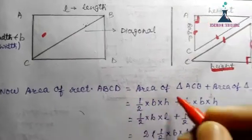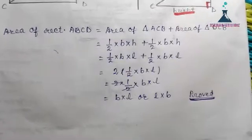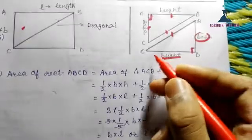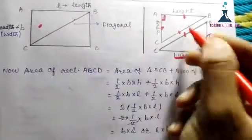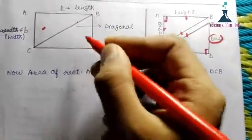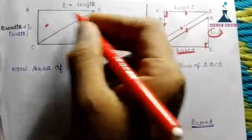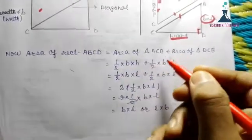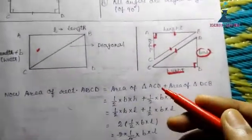The area of rectangle ABCD equals the area of triangle ACB plus the area of triangle DCB. So: area of rectangle ABCD = (half into base into height) + (half into base into height). This is based on the triangle area formula we established earlier — half into base into height.